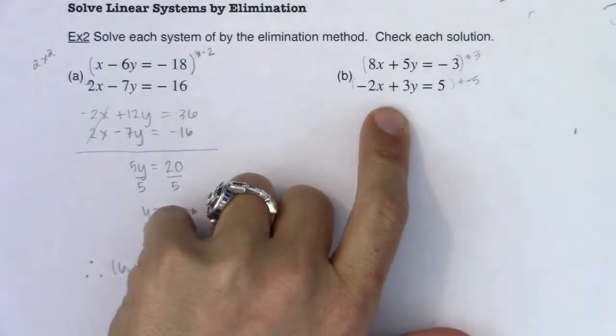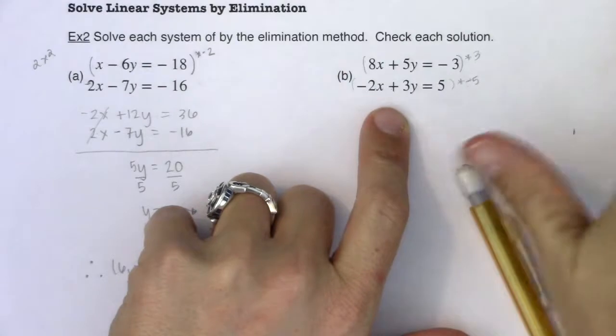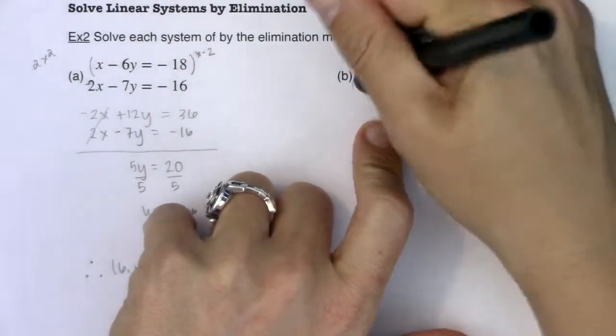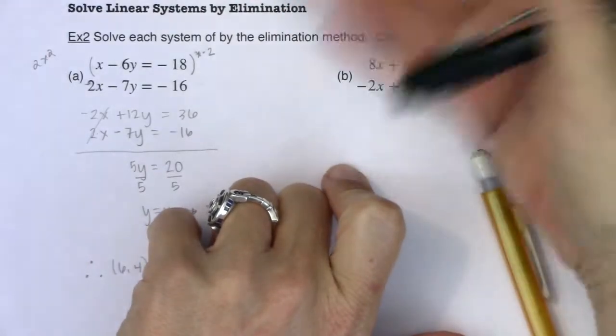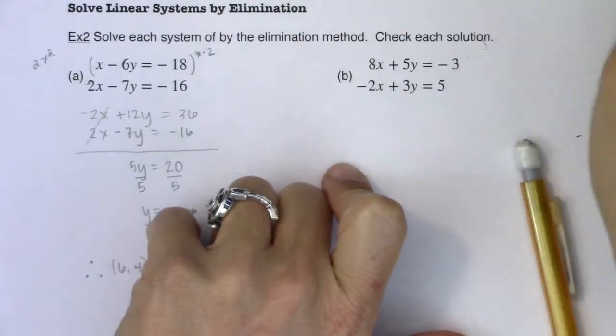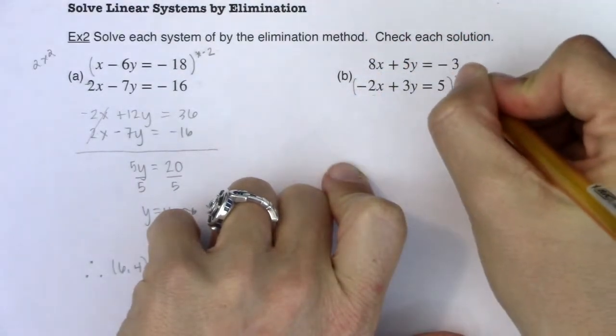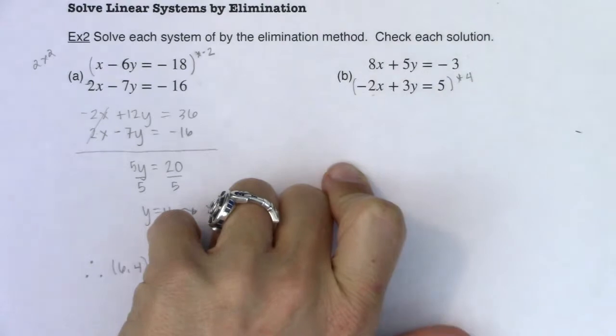So again, there are many options for solving these and they're all going to take us to negative 1, 1 because that is the solution to this system of equations. But like I said, when I'm going through this, the fact that the x variables are already opposite in sign is a bonus for me. So I just say, well, I'm going to multiply this by 4.